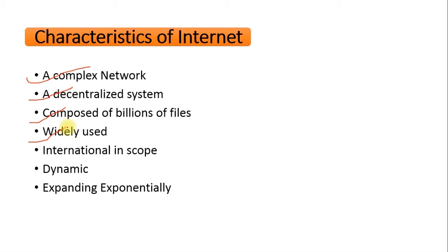The fourth characteristic is that the internet is widely used. Statistics show that there are more than 147 million people using the internet, with over 400 million home users daily. The fifth characteristic is international scope — the internet is a global network that can be accessed by people from all over the world for different purposes.